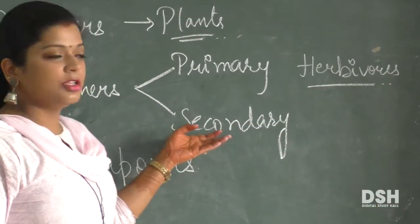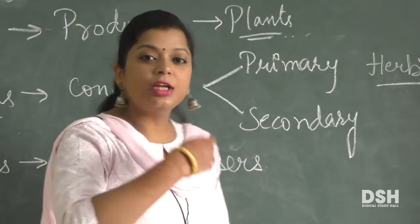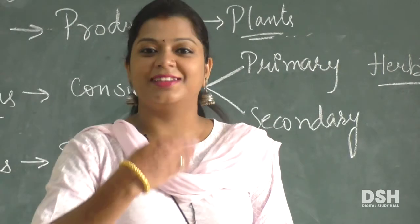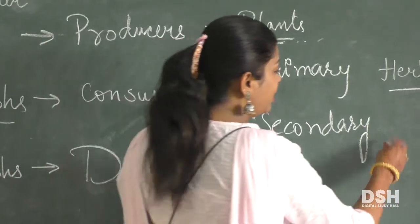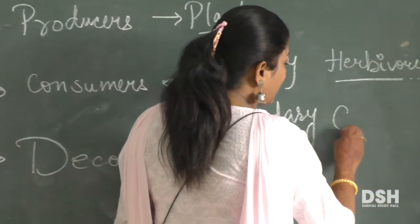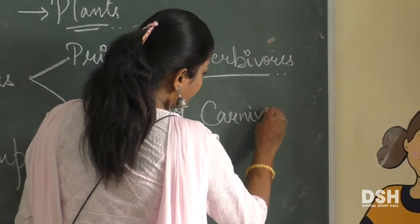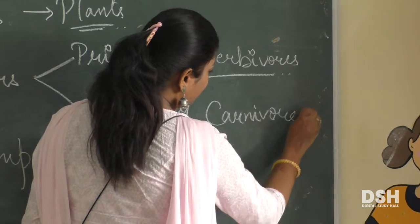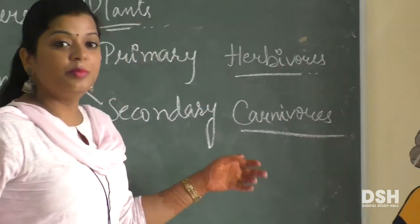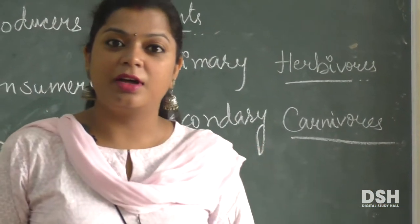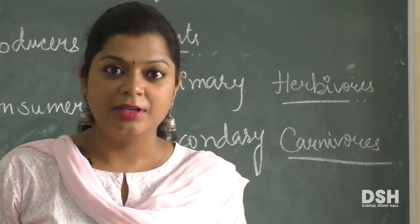Then secondary consumers — secondary consumers are those that eat the primary consumers. These are the carnivores, for example lion, tiger, cheetah, and leopard.